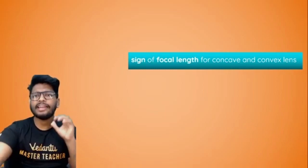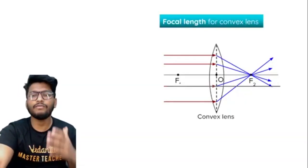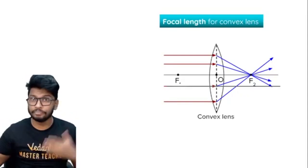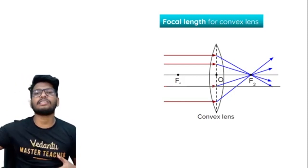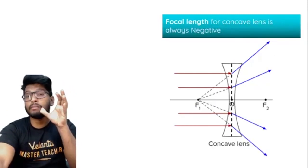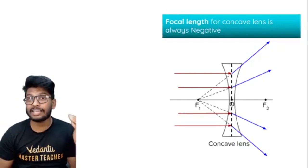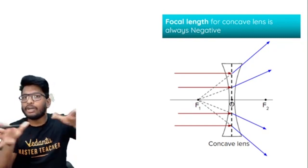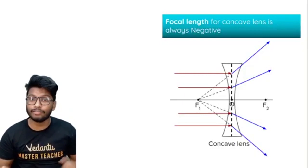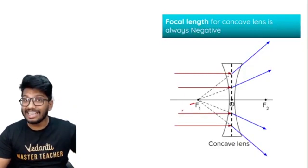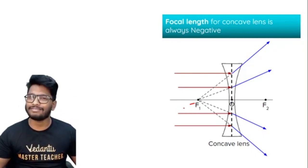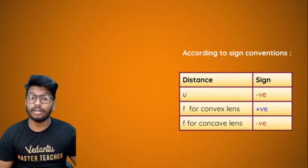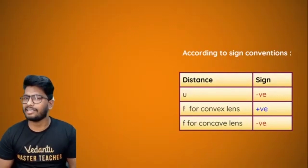For a convex lens, the focal length is positive because the focus lies on the right-hand side — converging rays of light meet on the other side of the lens. For a concave lens, the focal length is negative because the focus lies on the same side as the object — a diverging lens causes rays to appear to meet on the same side. So: convex lens focal length is positive, concave lens focal length is negative.